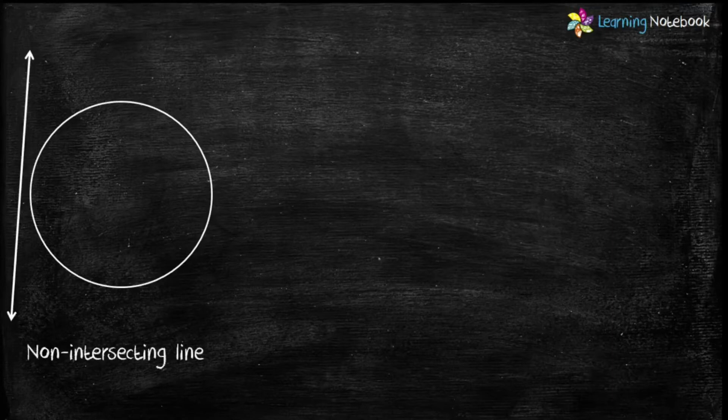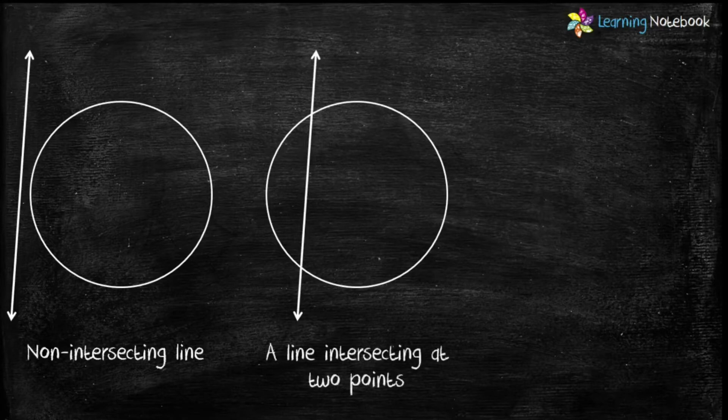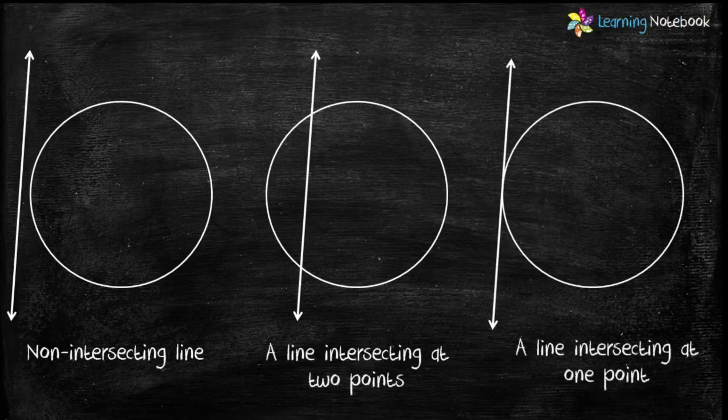Now, let's consider a circle and a line in a plane. There can be three different situations. First is a non-intersecting line. Second, a line intersecting the circle at two points. And third, a line intersecting the circle at exactly one point.